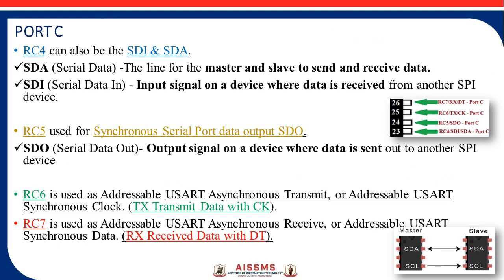The remaining four pins of Port C are RC4, RC5, RC6, and RC7. RC4, which is pin number 23, provides two features: SDI and SDA. SDA means serial data — the line used by master and slave to send and receive data. Data is transferred serially, bit by bit, using serial communication protocols. When this serial data transfer occurs, the SDA pin is high, otherwise low.